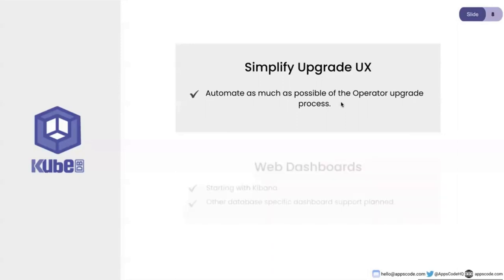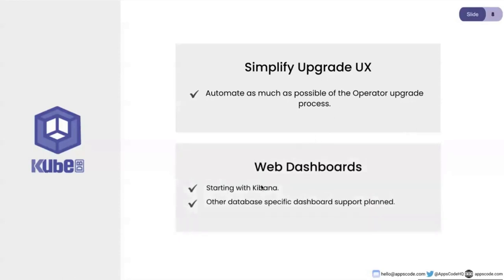Another thing we're looking to do is web dashboards. This is different from our web UI - when talking about the web UI we're talking about database deployment, provisioning, Grafana, all of that. But each database also has its own dashboards - for example Elasticsearch has Kibana. Today we have instructions written in documentation on how to do these things, but we're looking to bring those under operator support. When you deploy an Elasticsearch database, it will automatically deploy a Kibana instance and connect it to that Elasticsearch instance.